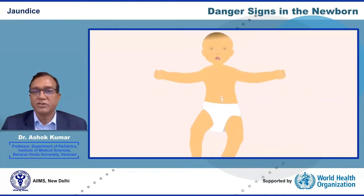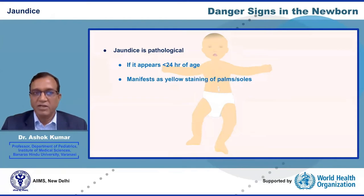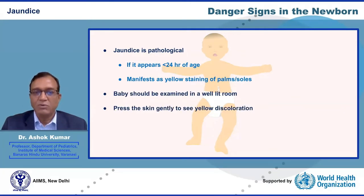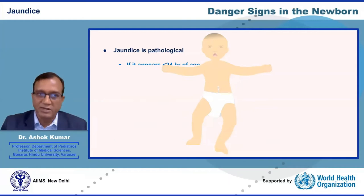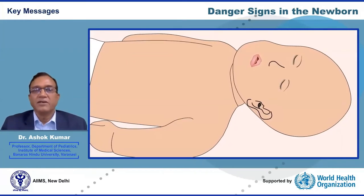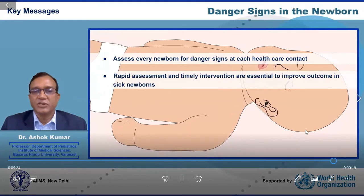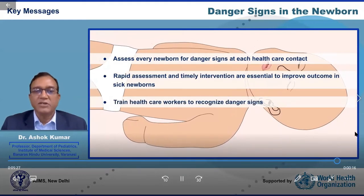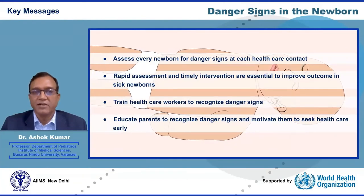Jaundice in newborns is usually physiological and requires no treatment, but is pathological if it appears in the first 24 hours or involves yellow staining of palms and soles. Examine in a well-lit room, pressing skin gently to see yellow discoloration. Visual assessment is unreliable, especially during phototherapy — always obtain serum bilirubin levels. Key messages: assess every newborn for danger signs at each contact, train healthcare workers, educate parents to recognize signs and seek care early.